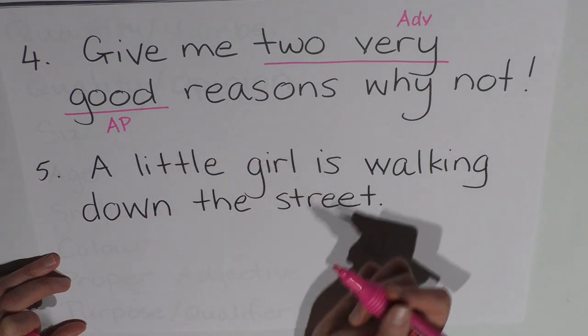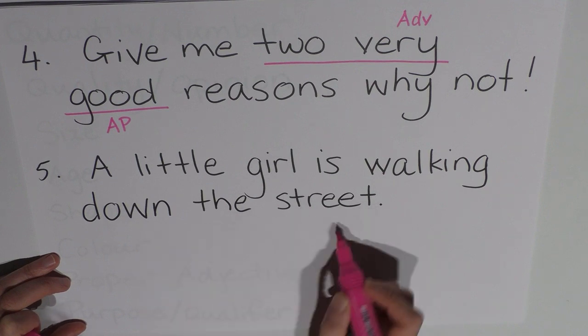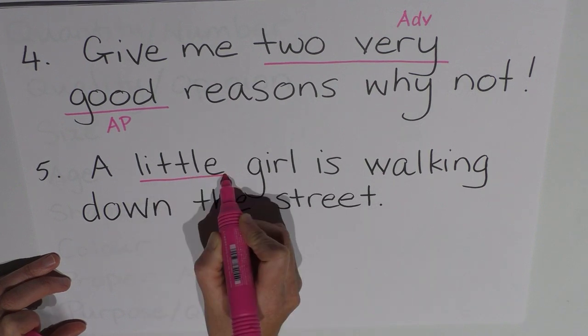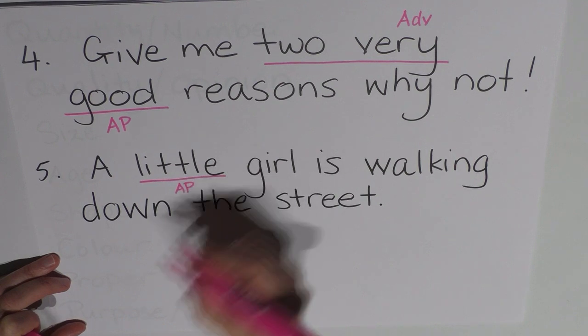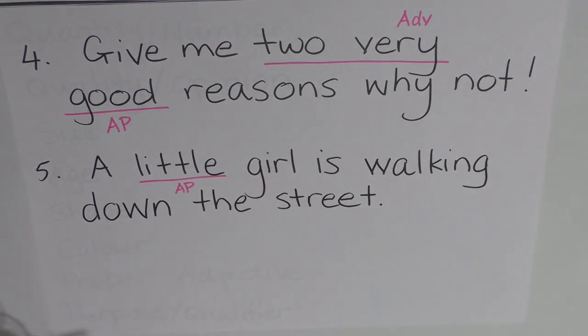And finally, our last sentence is a little girl is walking down the street. Little is our adjective phrase here, and this adjective phrase has only one adjective in it. And that one adjective, of course, is little describing the girl.